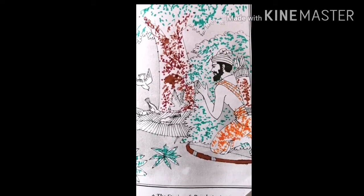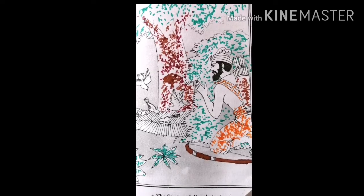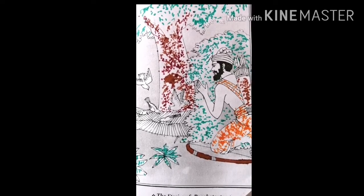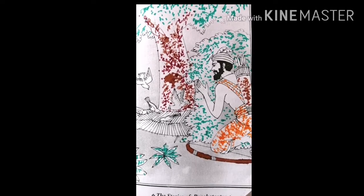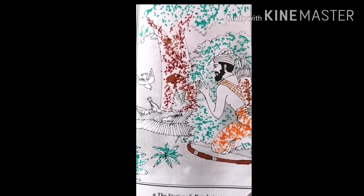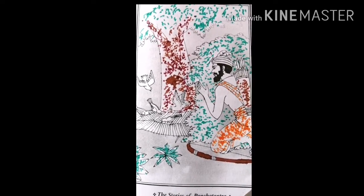Then each dove picked up a part of the net in his beak and all the doves flew up together into the sky. The fowler was surprised on seeing the birds flying along with the net.